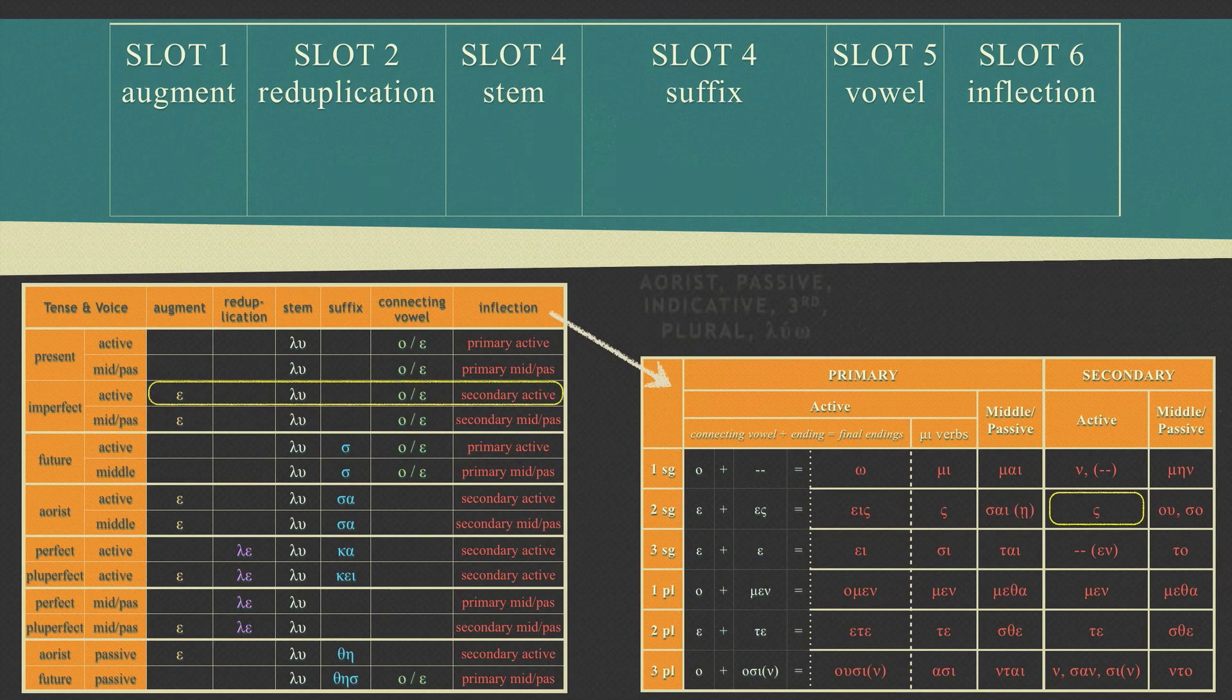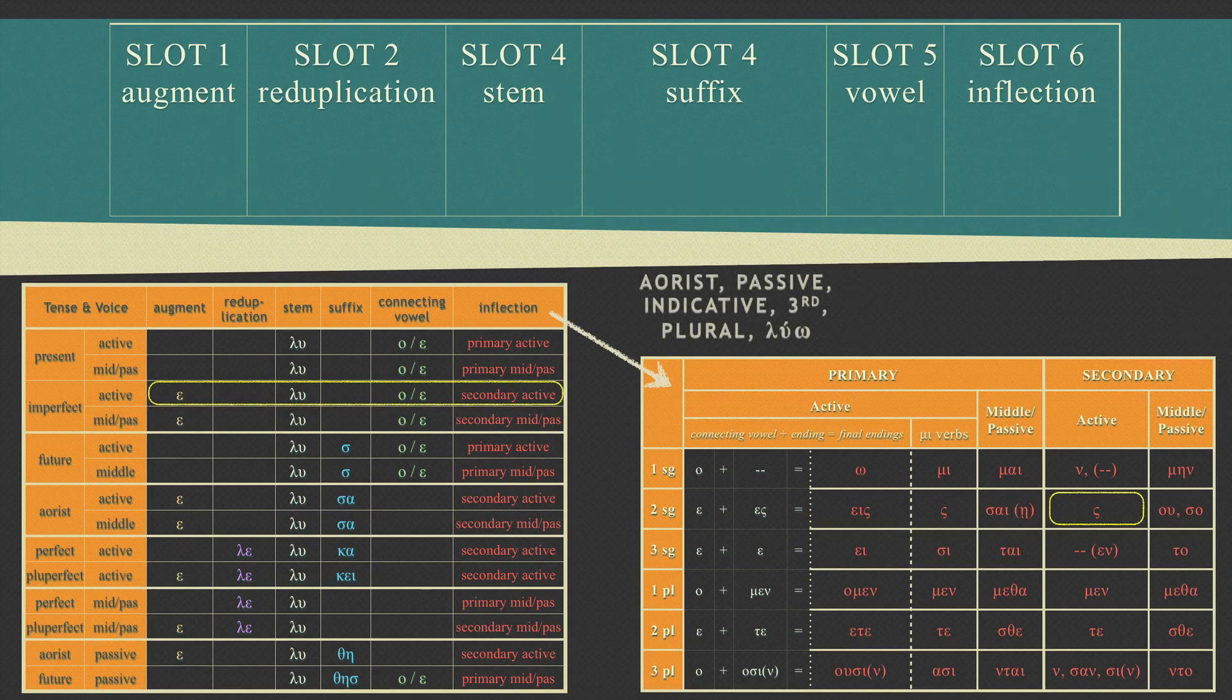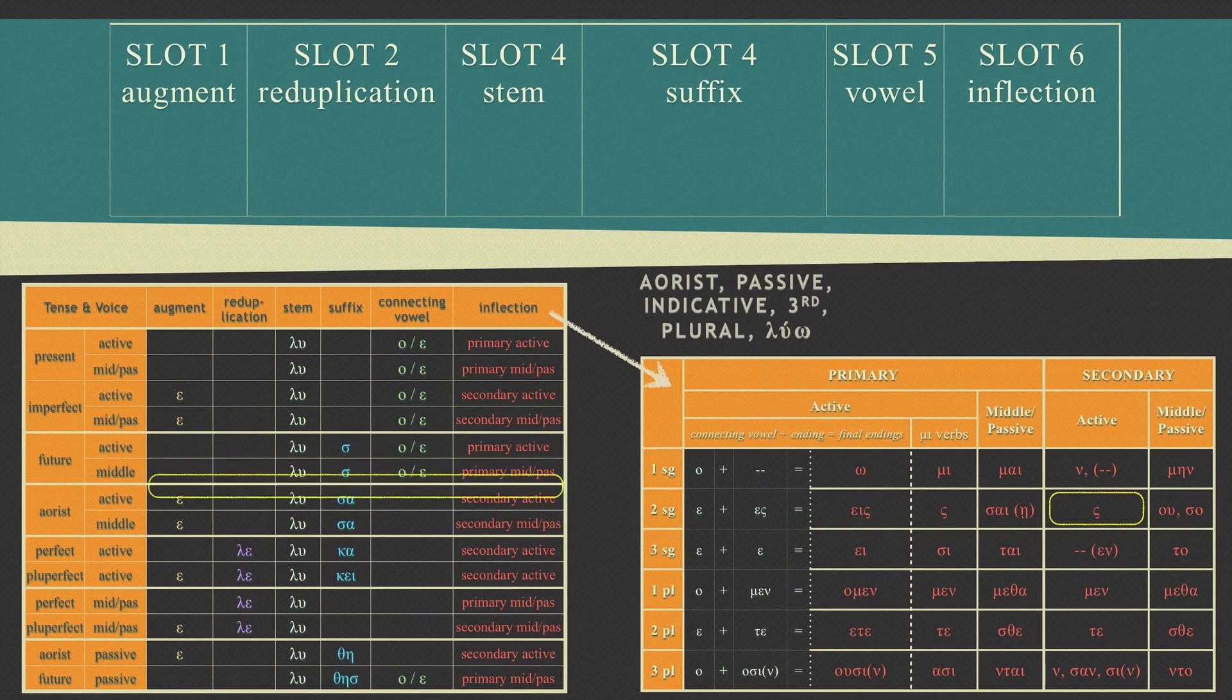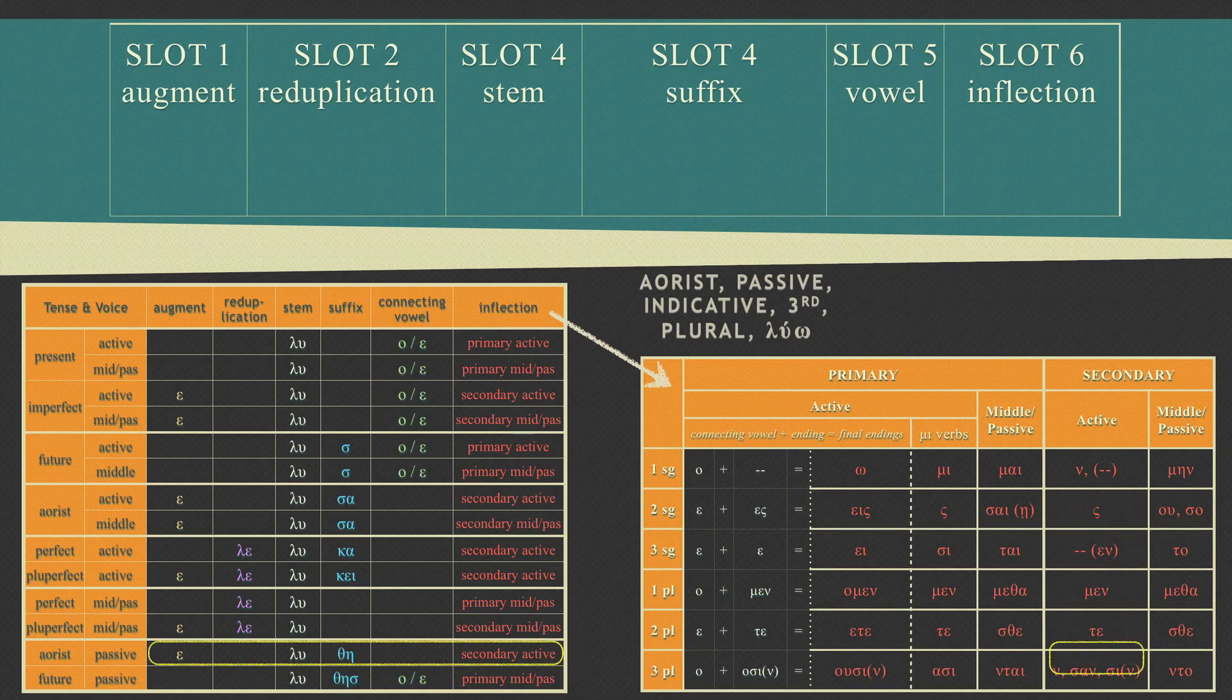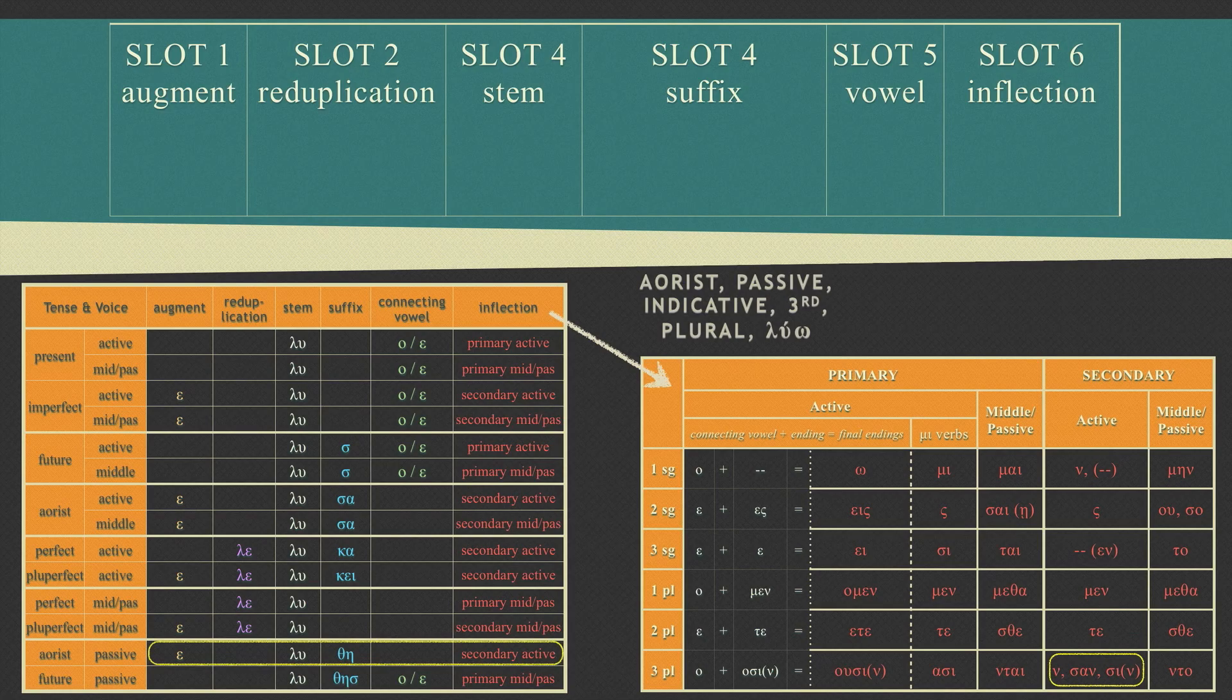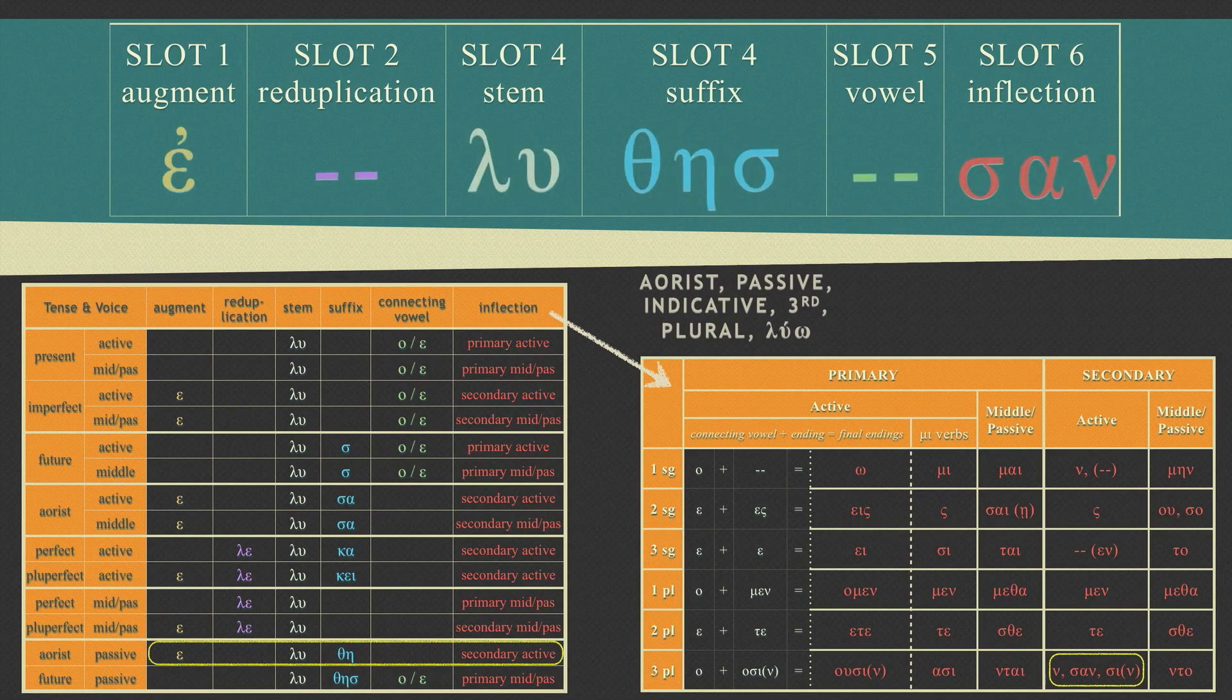What would an aorist passive indicative third person plural form of Lua look like? Looking again at our slot machine table, we see the aorist passive would build off of the stem by taking the augment, the theta-eta suffix, and the secondary active endings. Looking to our endings table, we see that the third plural secondary active endings has three options. In this case, it is Son. So the slot machine would look like this, with the final result looking like this.